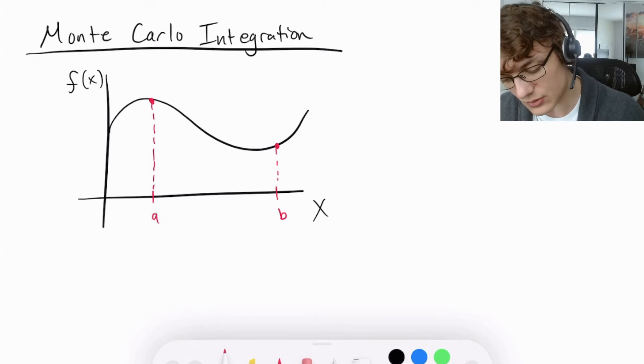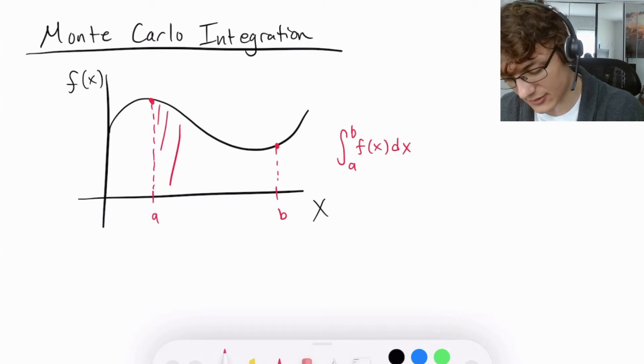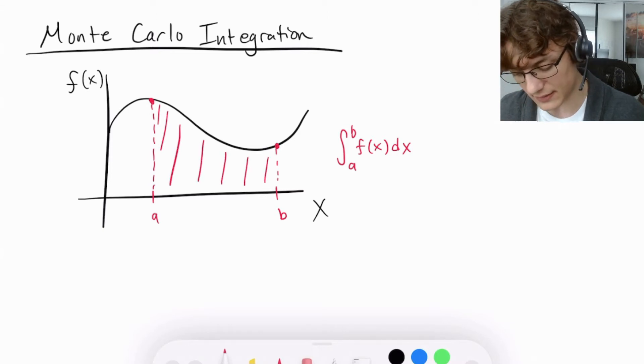Now usually, analytically, we could solve this as the integral from a to b of f(x)dx and that would give us this area here underneath the curve.